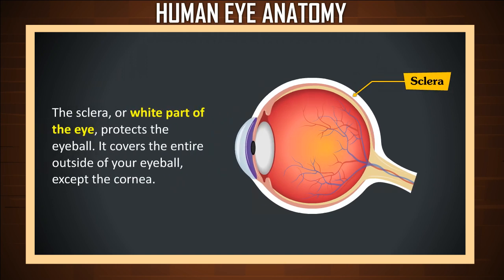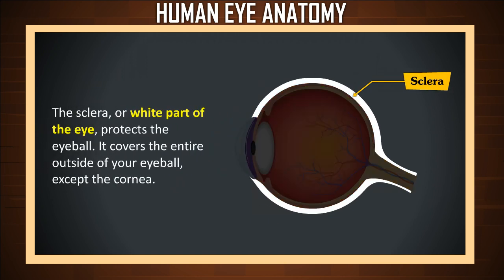Sclera. The sclera, or white part of the eye, protects the eyeball. It covers the entire outside of your eyeball, except the cornea.